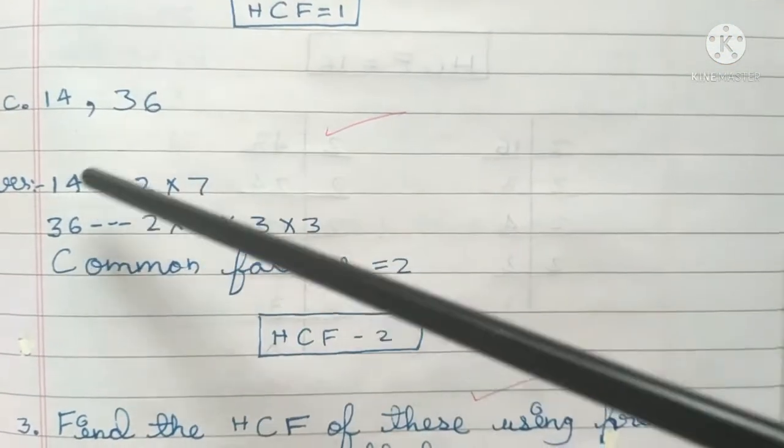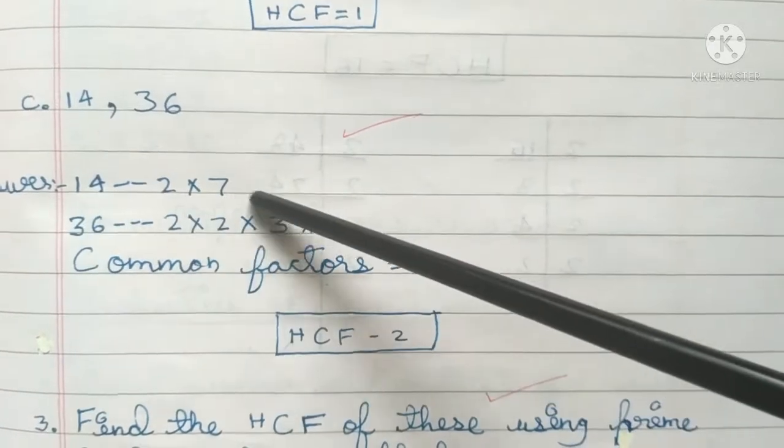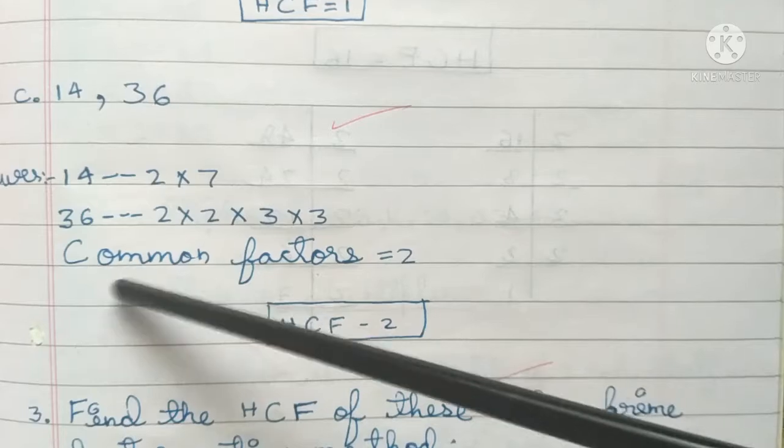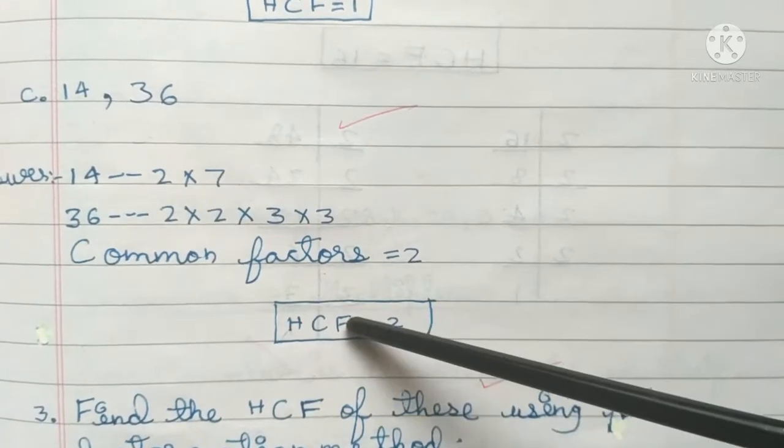Third one: 14 and 36. Answer: 14 is 2×7; 36 is 2×2×3×3. Common factor is 2. HCF is 2.